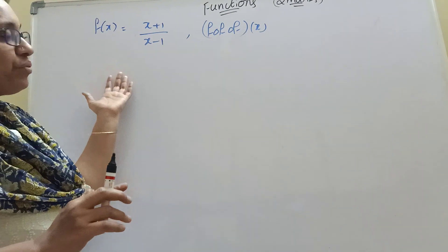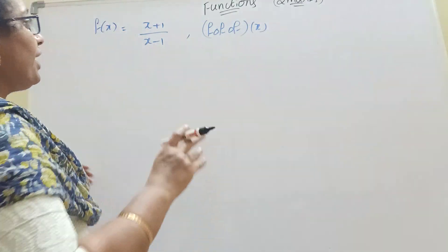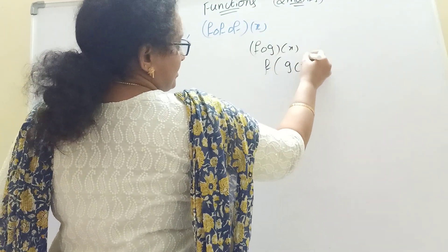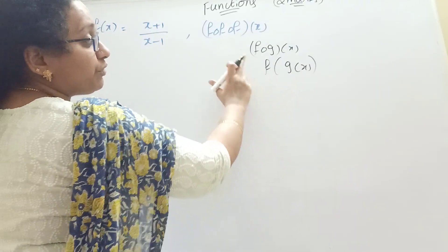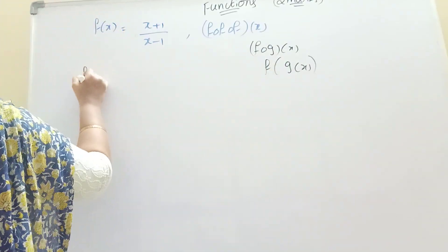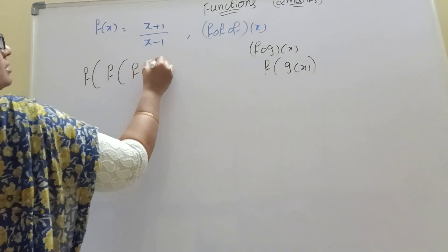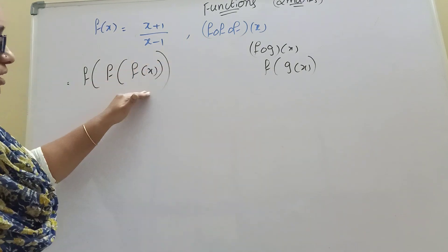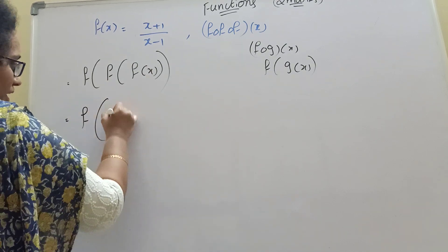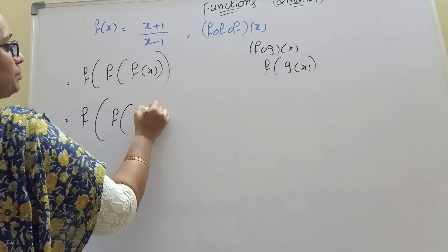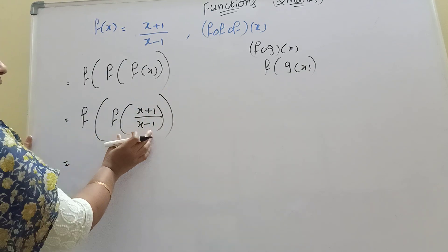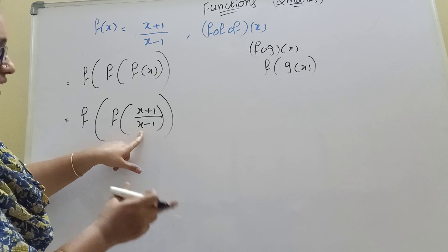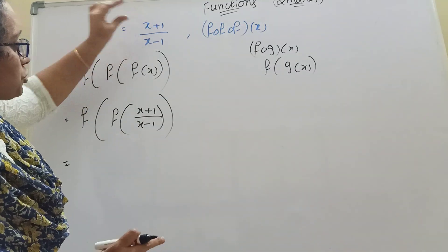Now I will try one more model. f of x — f circle f of x — this is the question. Suppose f of g of x — like that only here, which is f of f of x. Circular name is f of f of x. The function is x plus 1 by x minus 1. Now x is equal to x plus 1 by x minus 1. Since x plus 1 by x minus 1 is there, this is x plus 1 by x minus 1.